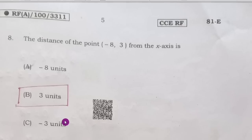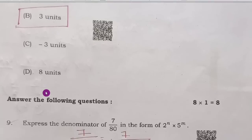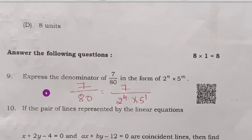Eighth question: the distance of the point (−8, 3) from the x-axis is 3 units. Option B is the right answer.